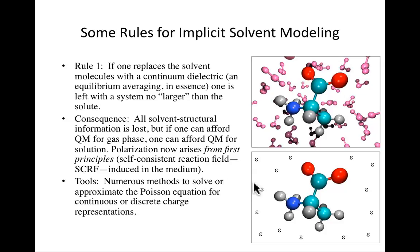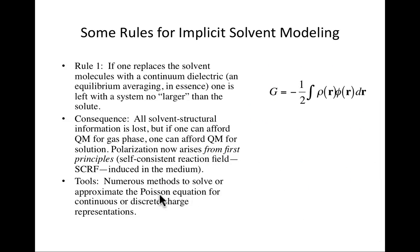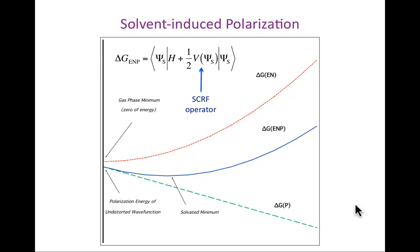There are numerous methods to solve for the polarization energy, this interaction. The Poisson equation is the classical equation that describes how a continuous or discrete charge representation interacts with a surrounding dielectric. The free energy to create a charge distribution in a given potential is given by this equation. The Poisson equation tells you how to relate the charge distribution to the potential. This is just classical electrostatics from classical physics. But I want to focus more on the conceptual aspects before talking much about algorithms.